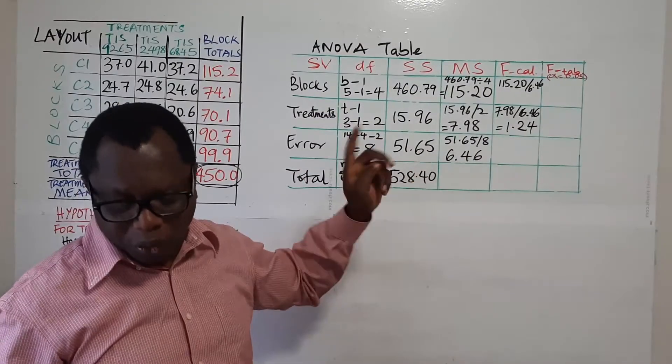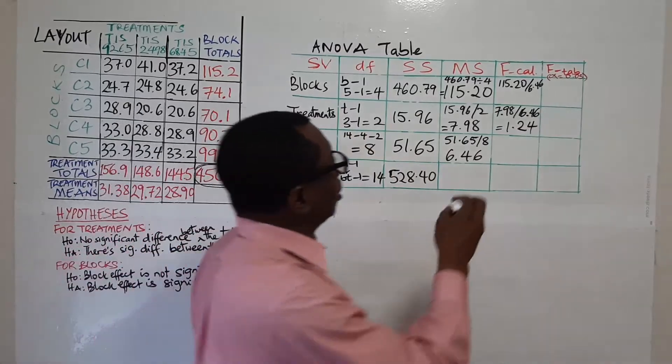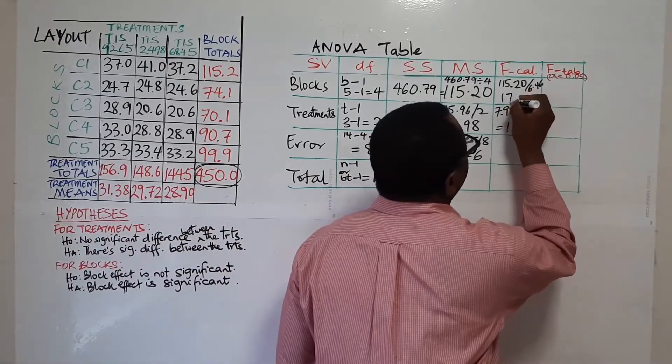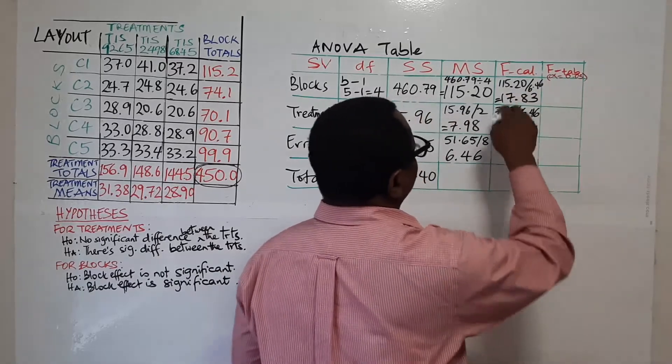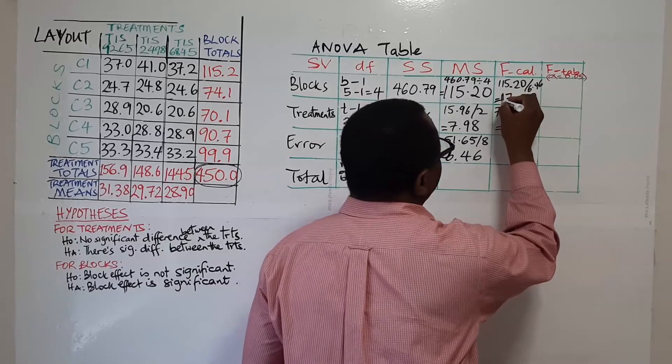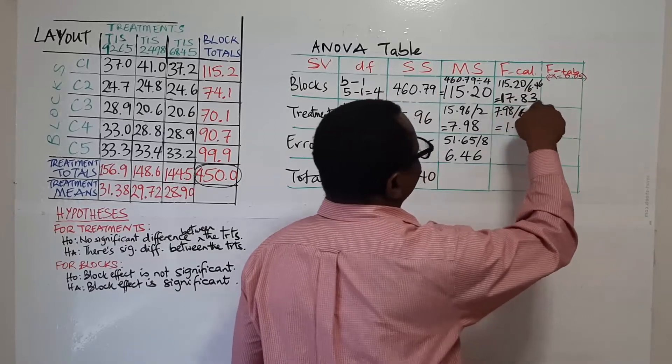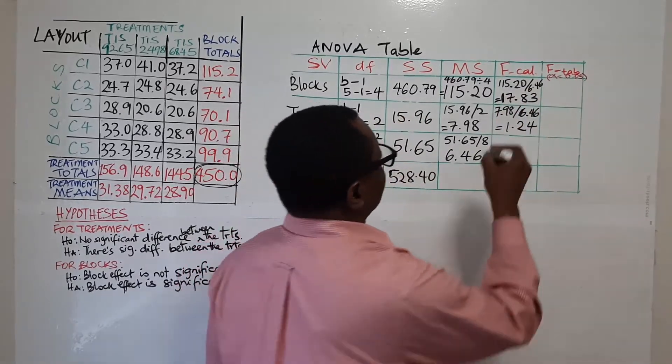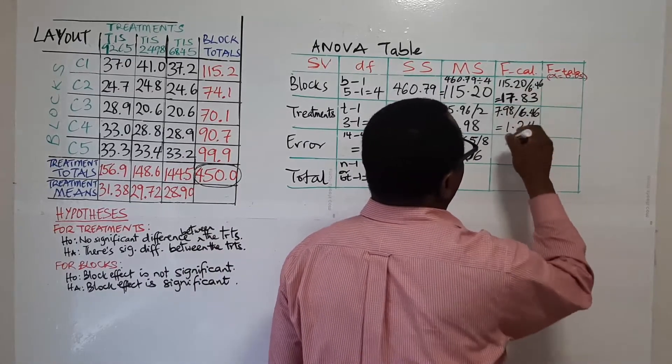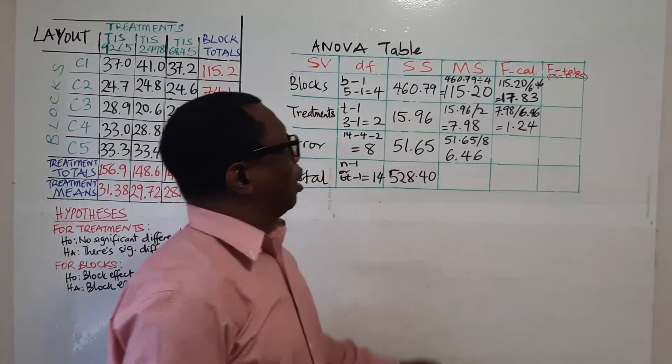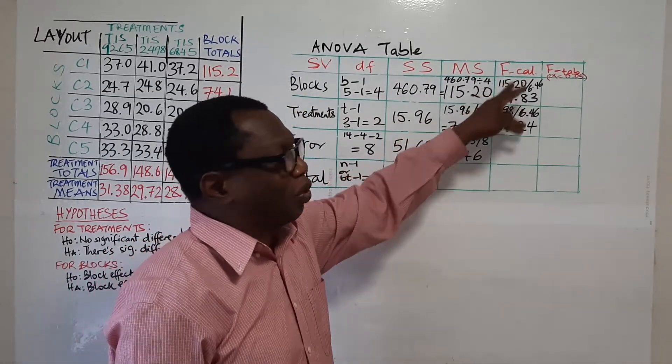For this first one here, 1.24. And here, 17.83. That's what you will get here. 17.83. So that's our F calculated.